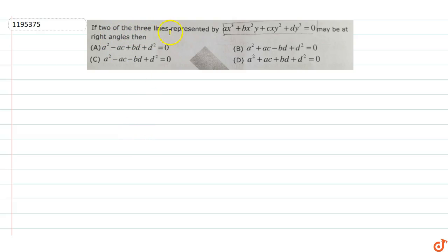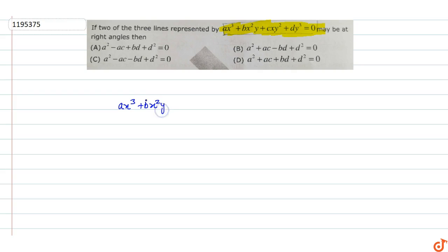The question is: if two of the three lines represented by ax³ + bx²y + cxy² + dy³ = 0 may be at right angles, then find the condition. Two of these lines can be perpendicular to each other. If three lines represent two perpendicular lines, then we use the condition involving x²y².